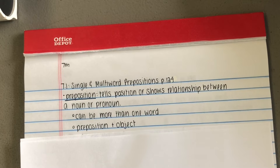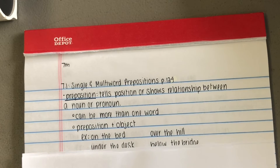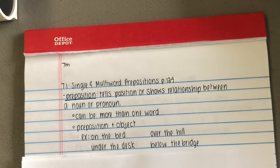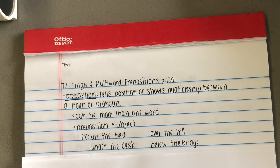Multi-word prepositions also have an object with them. For example, we have on the bed, over the hill, under the desk, below the bridge — these are more than one word. They're not multi-word prepositions like according to or in regard to, but these are the prepositions with their objects.